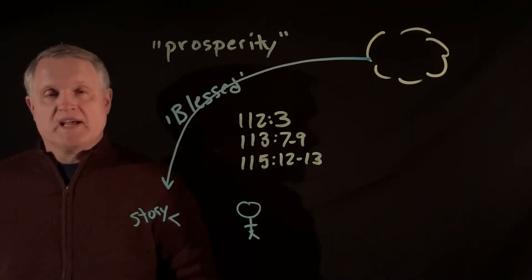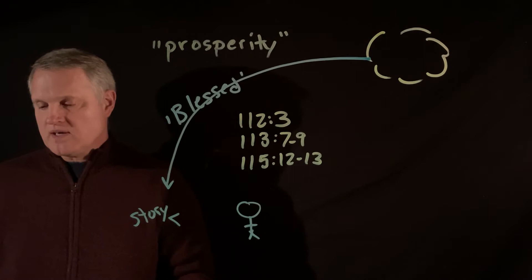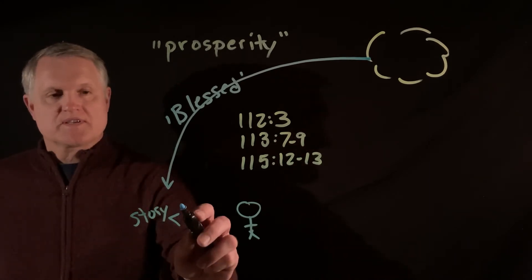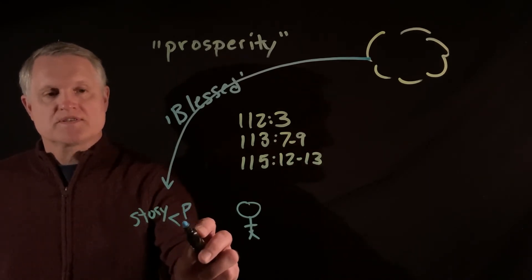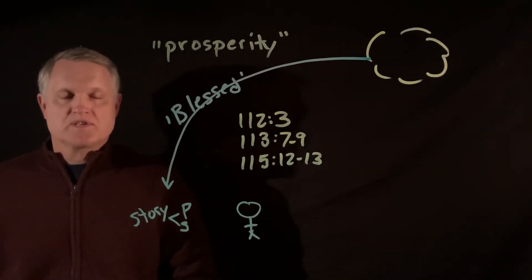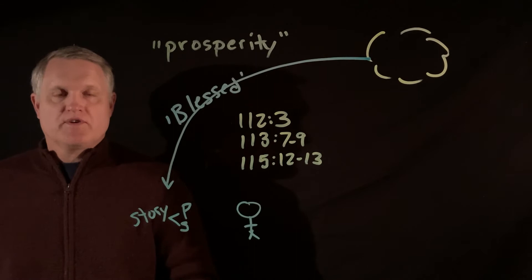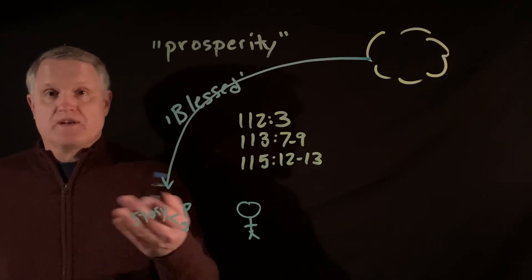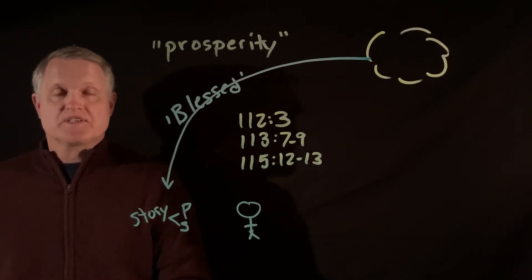And then even Joshua, in chapter one, verse eight, as he stands ready to go in, he's told this, the book of the law shall not depart from thy mouth, that you may observe to do it, for then you will make your way prosperous, and you will have good success. The two words prosper and success, very common words in Hebrew, 139 times between them, and they just stand for the general idea of succeeding at something.